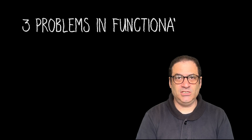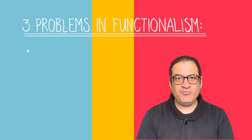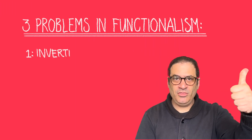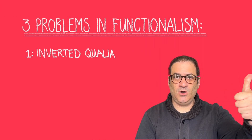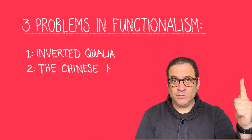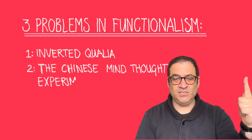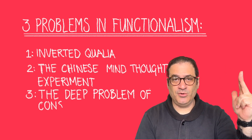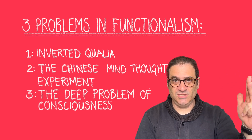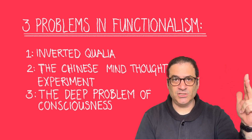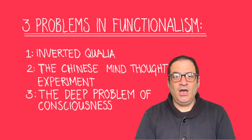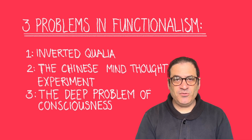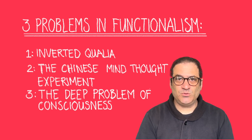Hello, today I'm going to introduce you to three problems of functionalism. The three problems are: one, the problem of inverted qualia; two, the Chinese mind thought experiment; and three, the problem of consciousness. Just before we get into that, I want to briefly remind you what the functionalist theory is.